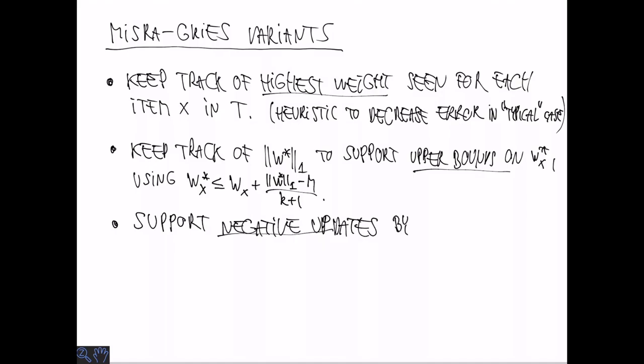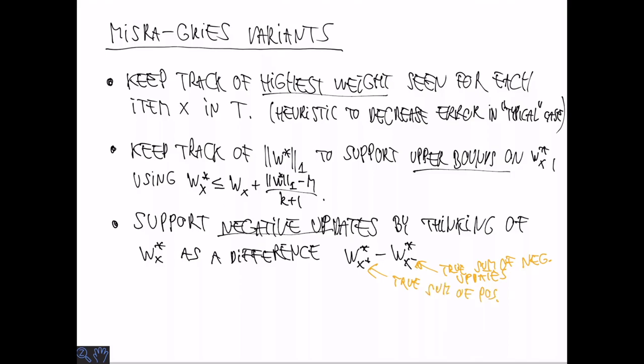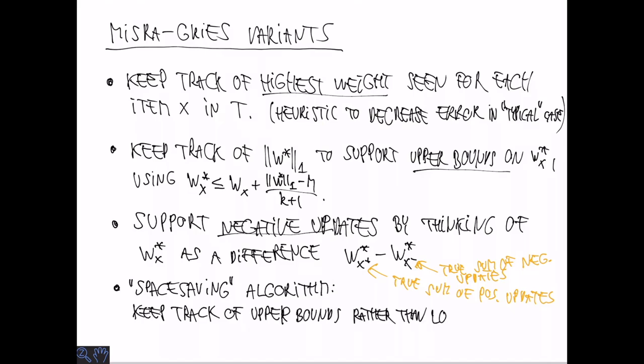Finally it's possible to give some support for negative updates by simply thinking of negative and positive updates as affecting several separate variables. So instead of thinking of a true count as one variable we think about it as a difference between two non-negative variables and we put both of these values into the sketch and estimate the true count of negative updates and the true sum of positive updates. The so-called space-saving algorithm is a variant of Misra-Gries that was independently discovered that keeps track of upper bounds rather than lower bounds. It's discussed in section 3.3 in the book where they also argue that it's actually equivalent to Misra-Gries in the sense that one can be translated to the other.